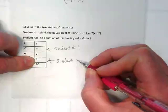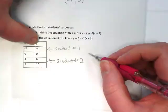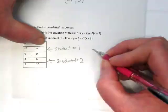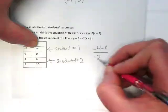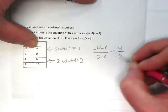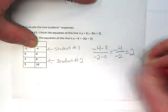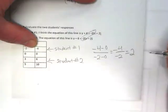They both used negative 2 as the slope, so now I want to just check and see if they are correct. I'm going to use the first two x, y pairs to check it. Negative 4 minus 0 over negative 2 minus 0 gives me negative 4 over negative 2, which equals positive 2. So this was their mistake right here. It should have been a positive 2.